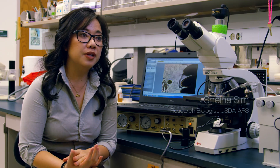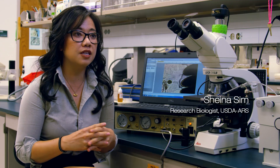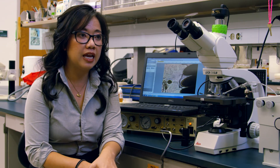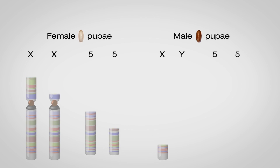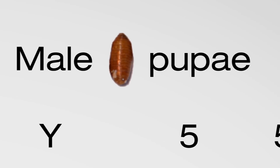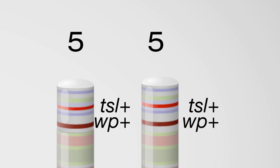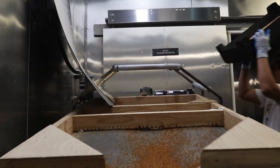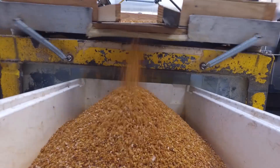One of the cornerstones of SIT is the availability of a genetic sexing strain — basically a strain where you are able to separate males from females at a very large scale. A genetic sexing strain exists for the medfly, called the Vienna line, developed by IAEA. In this strain there are two traits that enable genetic sexing: white pupae, where females have white pupae in contrast to males which have wild-type brown pupae, and temperature sensitive lethal (TSL). Females are homozygous for this TSL mutation, which means that if you increase the temperature, the females will die and only male flies will emerge. We're identifying the genes for white pupae and TSL through classical genetics, RNA-seq, and whole genome resequencing.